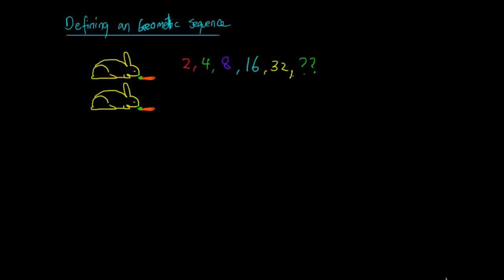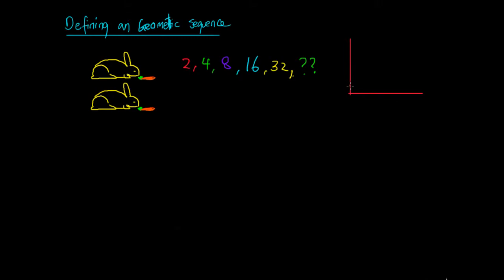Hey guys, so in this video we're going to have a look at defining a geometric sequence. We've previously looked at geometric sequences and we know that a geometric sequence is when we have an initial amount and then that initial amount is going to change by a constant ratio over time. You might start off with some number and then over time it changes by a constant ratio, so you get this upward sloping curve that increases by a faster and faster amount. That's what we call an exponential curve — it increases exponentially.